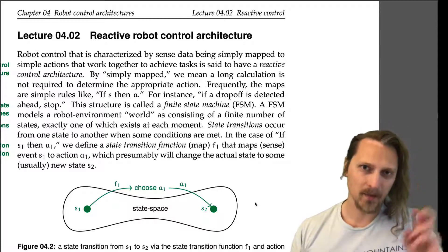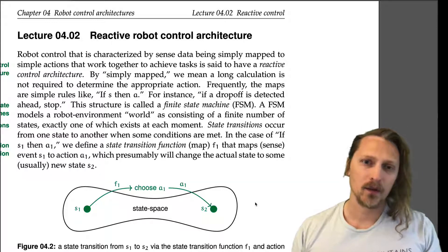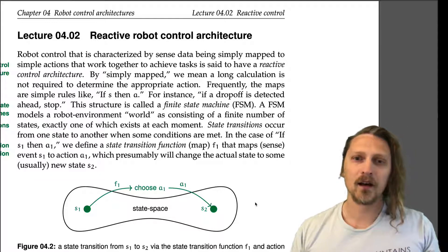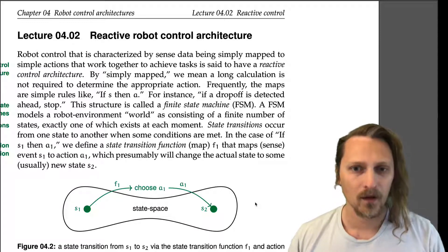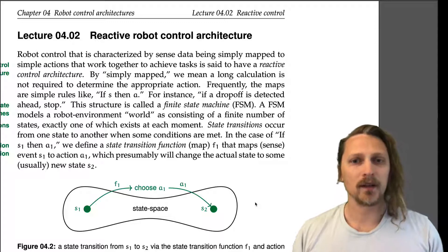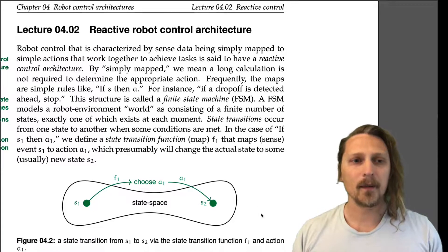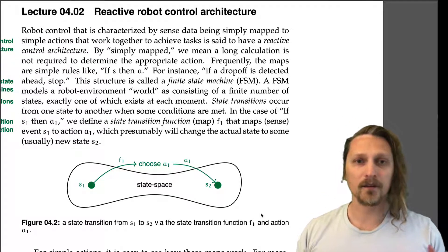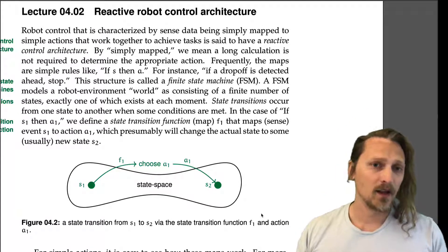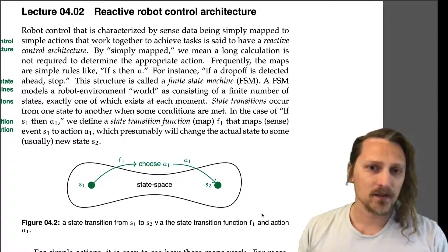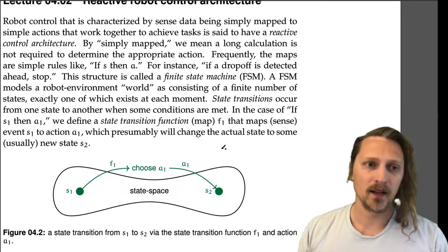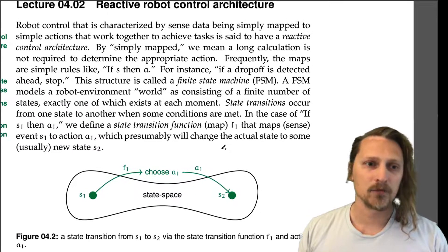By 'simply mapped,' we mean a long calculation is not required to determine the appropriate action. Frequently, the maps are simple rules like 'if S, then A.' For instance, if a drop-off is detected ahead, stop.